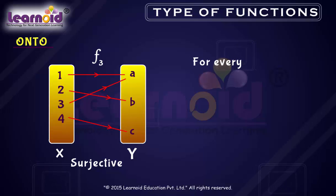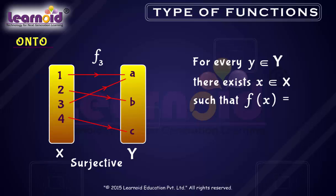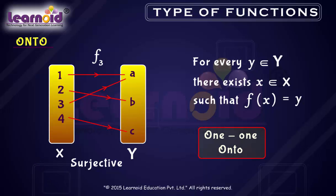For every element y belonging to set Y, there exists an element x in set X such that f(x) equals y. A function can be one-to-one and onto. Such functions are called bijective functions.